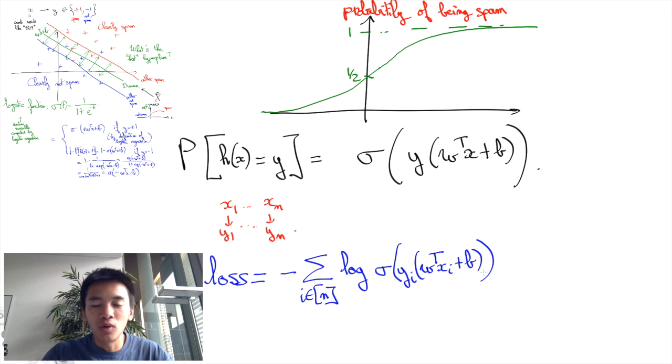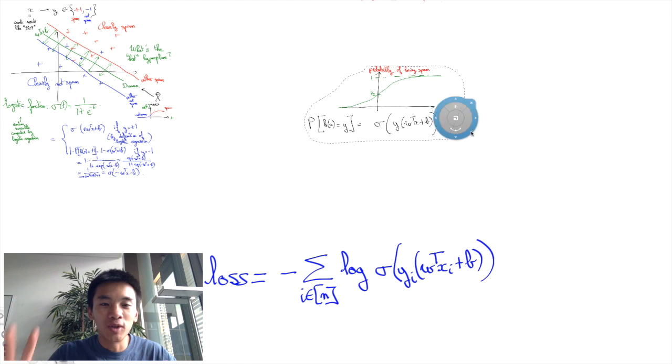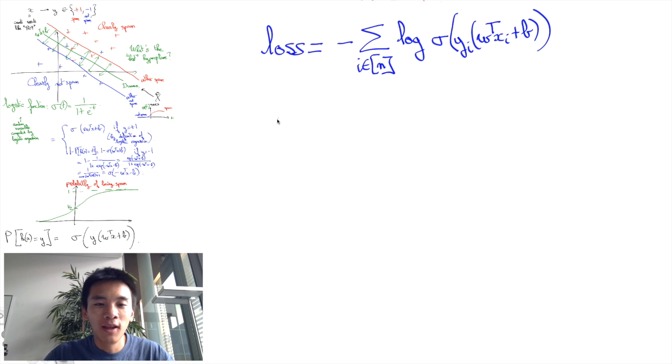So here we took a log that doesn't affect the monotonicity. So if you wanted to maximize the sigma of what's inside, maximizing the log of the sigma is exactly the same thing. Here we wanted a loss, a measure of how bad we were, so we added a minus sign.